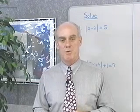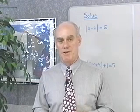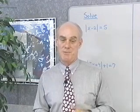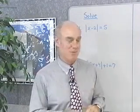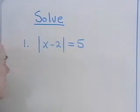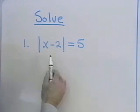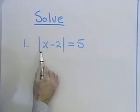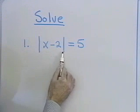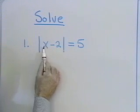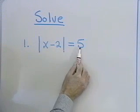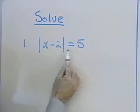Next, we want to look at equations that involve absolute value. Here's our first example. Let's solve the equation: the absolute value of the quantity x minus 2 is equal to 5.